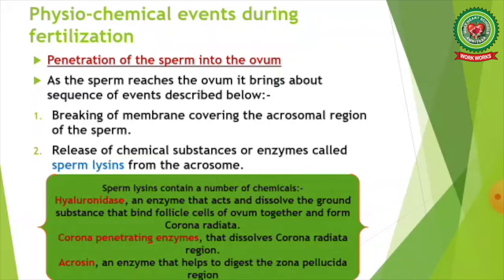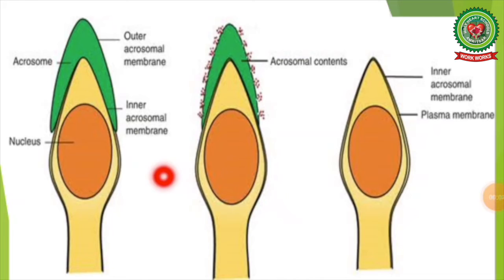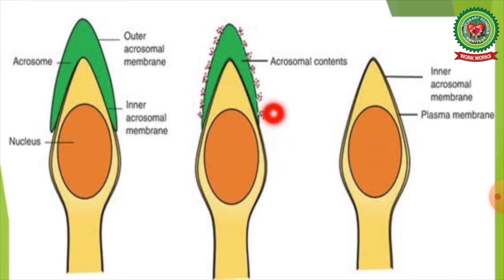Next are corona penetrating enzymes, which dissolve the corona radiata region. The third enzyme is acrocin, which helps to digest the zona pellucida region. In this image we can see capacitation. Capacitation is the functional maturation of the spermatozoa. Changes take place in the sperm cell membrane, in which receptors are made available through the removal of a glycoprotein layer.